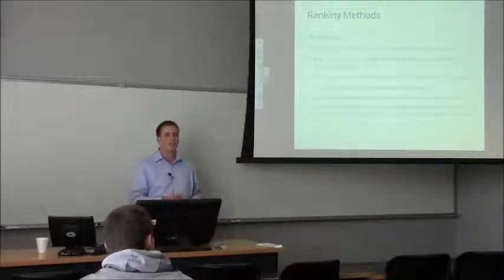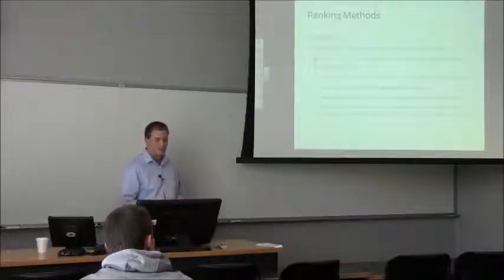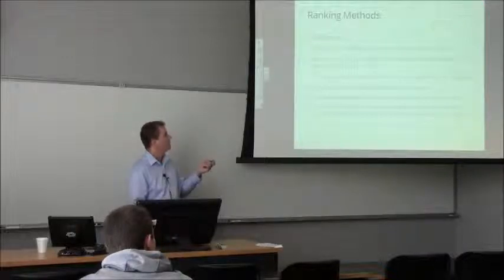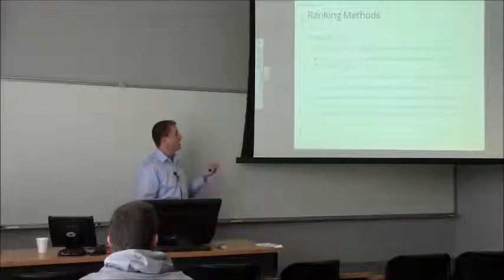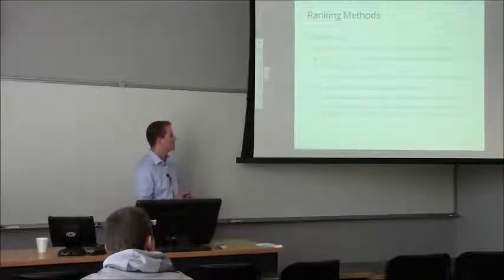And y is just going to be a vector of the ranking. So this is just a permutation of the integers 1 through n where 1 is the highest ranking and n is the last. So I'll also use this notation yi equals j means the ith object is ranked in the jth position.